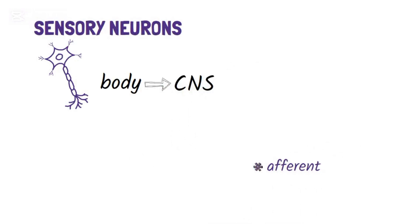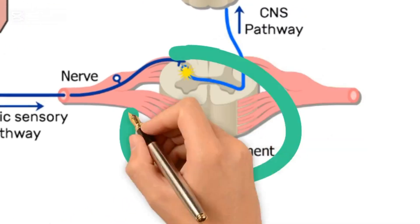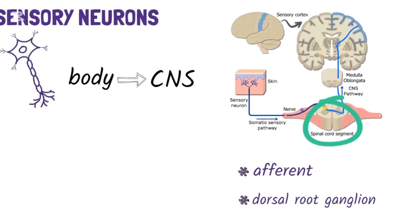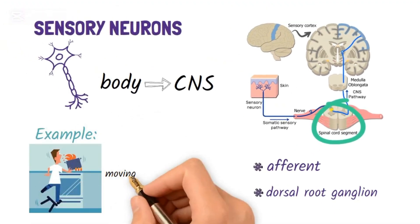These are afferent neurons and contain dorsal root ganglia, which carry information from the periphery to the spinal cord. An example is moving your hand away after touching a hot stove.